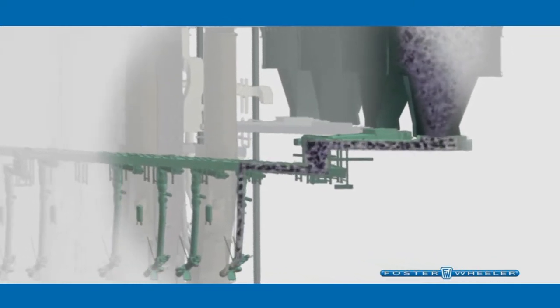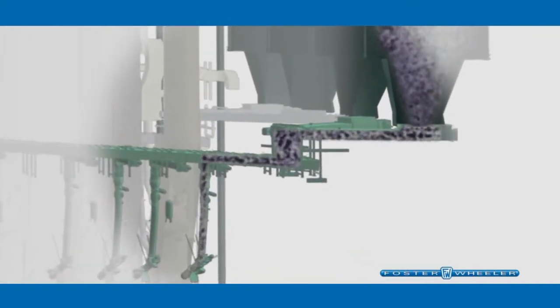Instead, the fuel is coarsely crushed and dropped into fuel chutes, which lead to ports in the lower section of the CFB furnace.